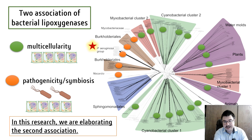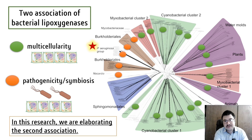We found two interesting associations of bacterial lipoxygenases and possibly bacterial oxylipin signaling. The first association was multitrophic interactions, depicted as green nodes at the phylogenetic network, and the second association was pathogenicity or symbiosis. In this research we are elaborating this association and searching for new evidence of a link between bacterial oxylipin signaling and pathogenicity, symbiosis, or other host-microbe interactions.